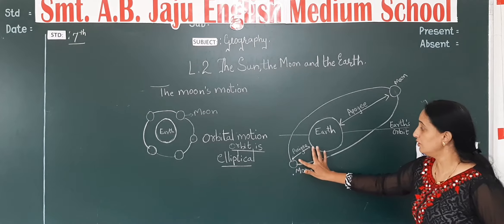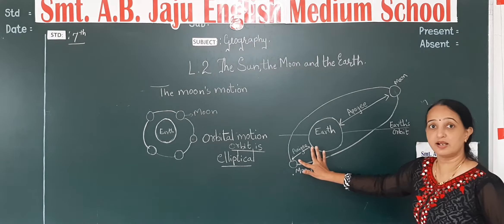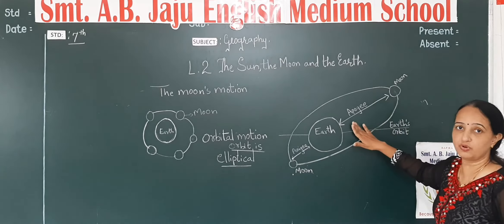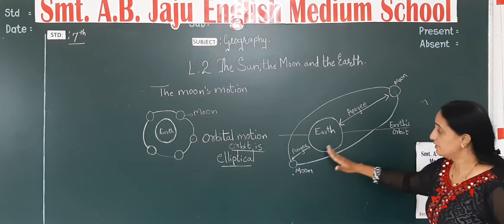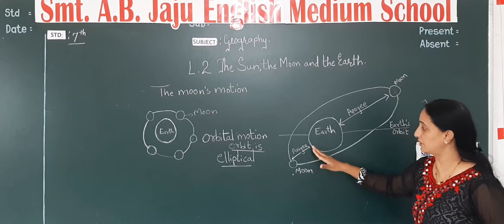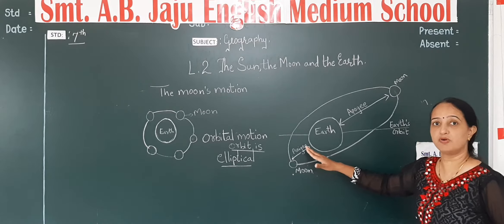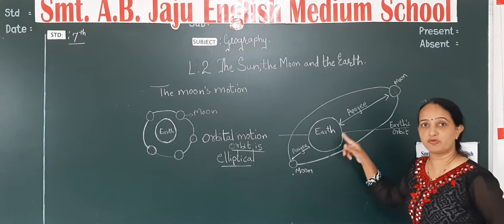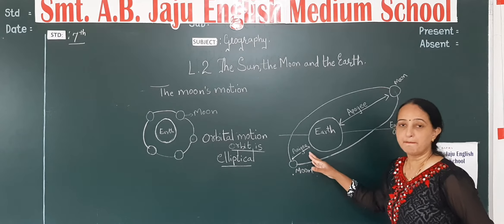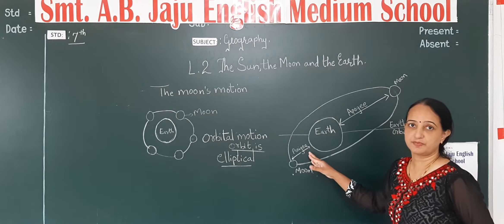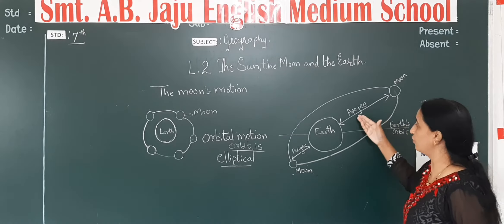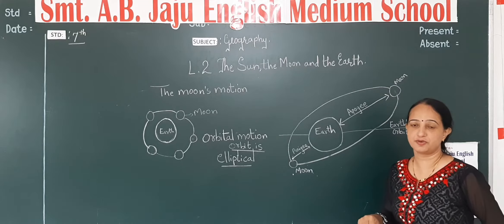When it comes to the moon's orbit near the earth, that position is called Perigee. When it comes to the orbit farther from the earth, that position is called Apogee. Today we are going to see this motion of the moon in our textbook.